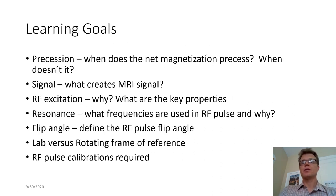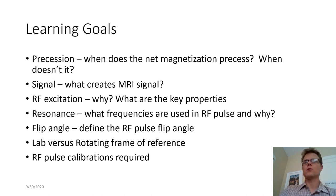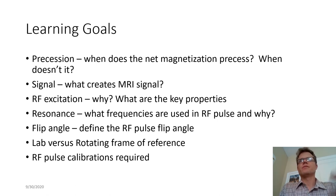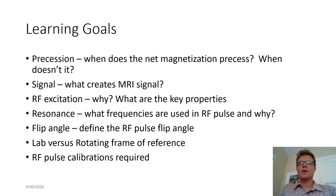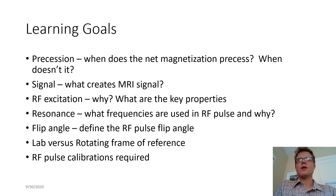That is it for this lecture on RF pulses. Here are the learning goals to review: make sure you're capturing the concepts of precession, where the signal comes from, and why that motivates RF excitation; why it needs to happen at the resonance frequency; the concept of flip angle; the lab versus rotating frame of reference — we'll do an example of that in class; and briefly at the end, that RF pulse calibration is required. Thank you very much.